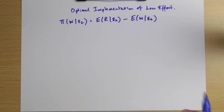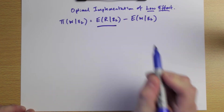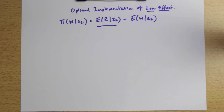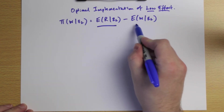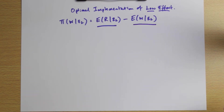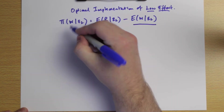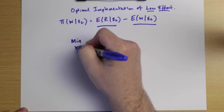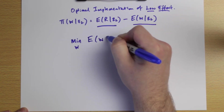Given that we're insisting on low effort, the expected revenue term becomes fixed — there's nothing the firm can do to change it. We have bad-state revenue and good-state revenue, and the probability of the bad state conditional on low effort is now fixed. So the firm can only change the cost of the contract, and the objective of maximizing profits becomes a cost minimization problem: minimize the expected cost of contract W conditional on low effort.